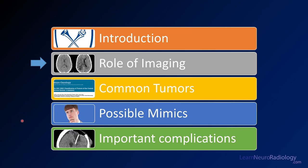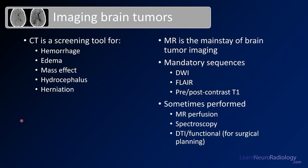Let's talk about the role of imaging in brain tumor emergencies. When imaging brain tumors, you have two main tools: CT and MRI. CT is a screening tool, used primarily to find complications of the brain tumor — things like hemorrhage, edema, mass effect, hydrocephalus or enlargement of the ventricles, and herniation.